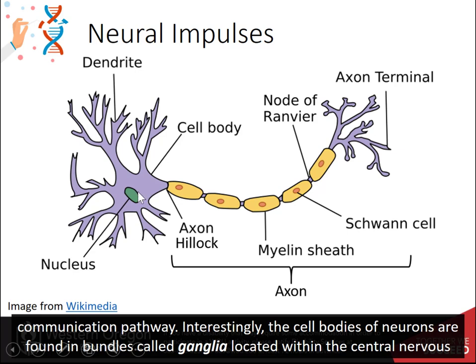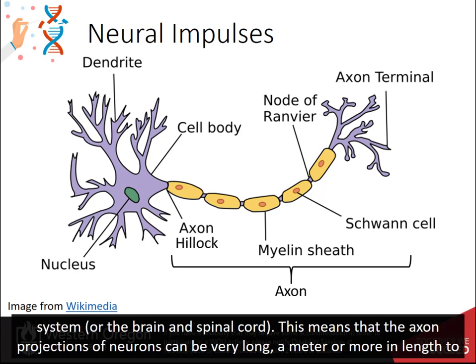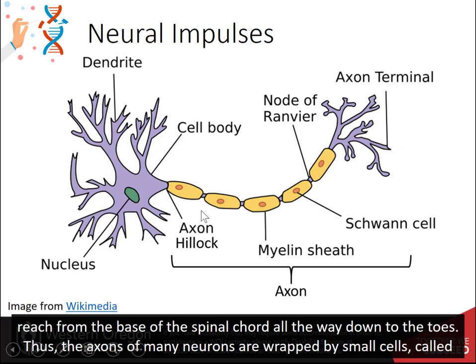Interestingly, the cell bodies of neurons are found in bundles called ganglia located within the central nervous system, or the brain and spinal cord. This means that the axon projections can be very long — a meter or more in length — to reach from the base of the spinal cord all the way down to the toes.